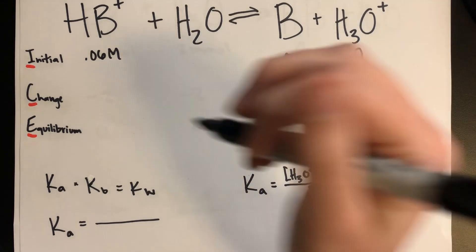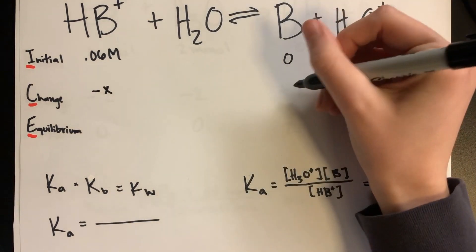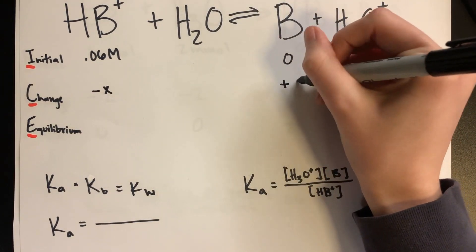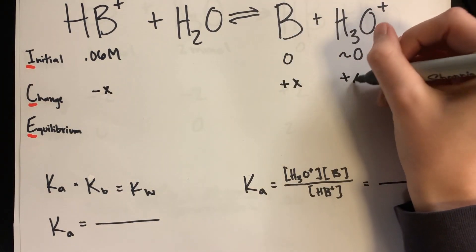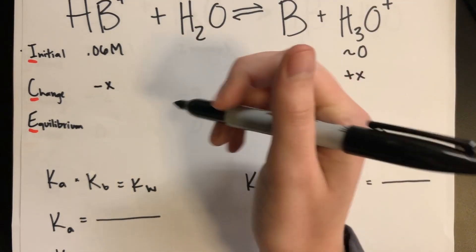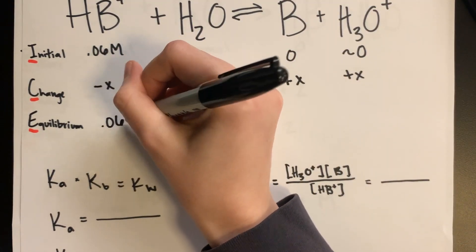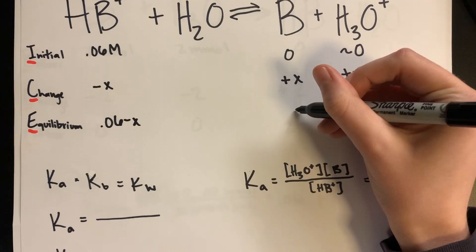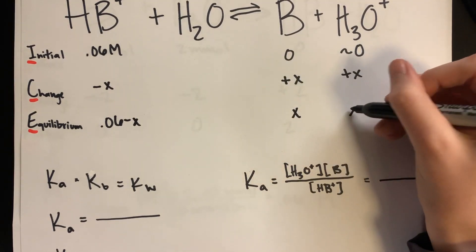The change line is going to be minus X, and on the product side, it will be plus X plus X. Carry it down, and it will be 0.06 minus X, and this side will be X and X.